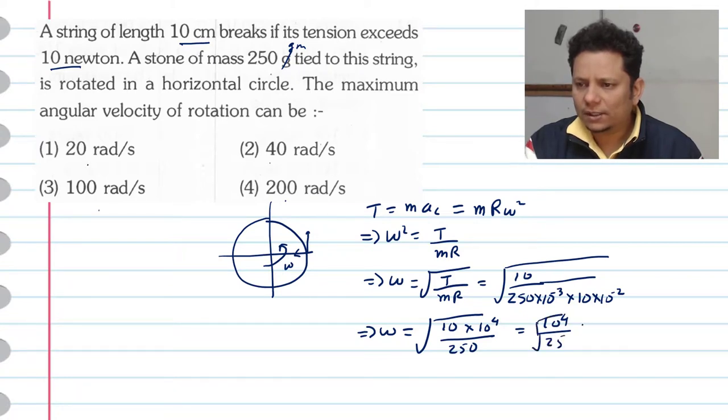This will be equal to 10 to the power 4 divided by 25 under the root. And this is equal to 4, and if this is equal to 100 divided by 5, this will be equal to your omega with a value of 20 radian per second.